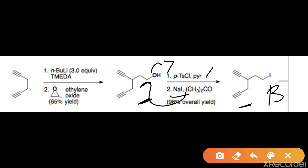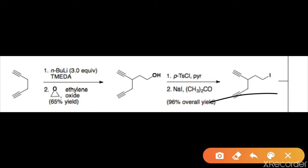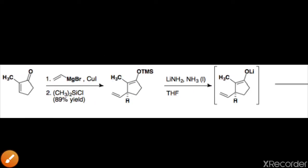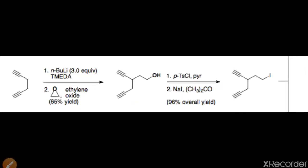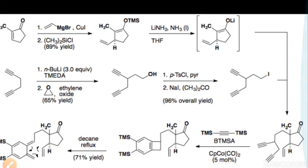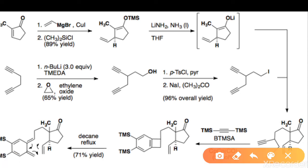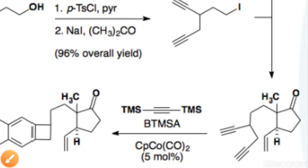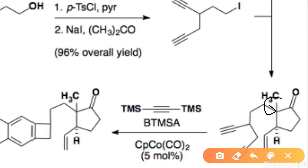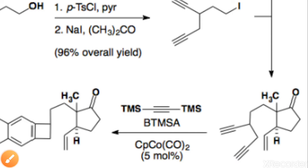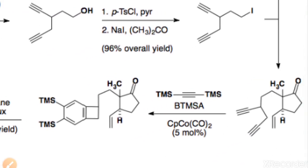Now we have both Intermediate A and Intermediate B. These are combined to form what we will call Intermediate C. You can see there is a formation of a new carbon-carbon bond — a new C-C bond formed between the alpha carbon of Intermediate A and the carbon which is attached to the iodine in Intermediate B.